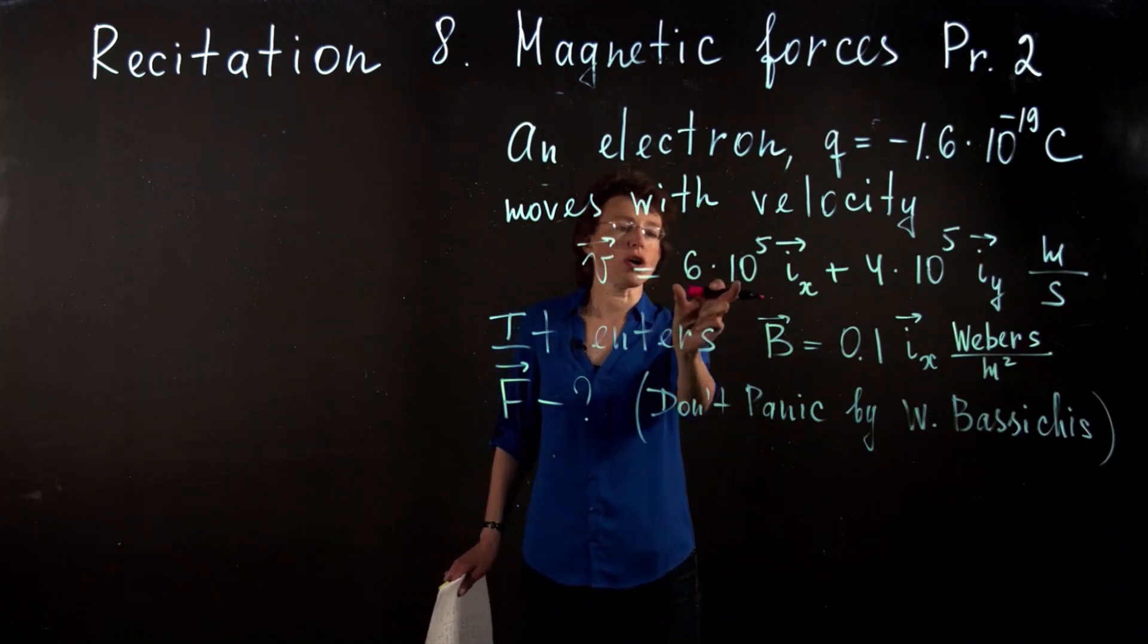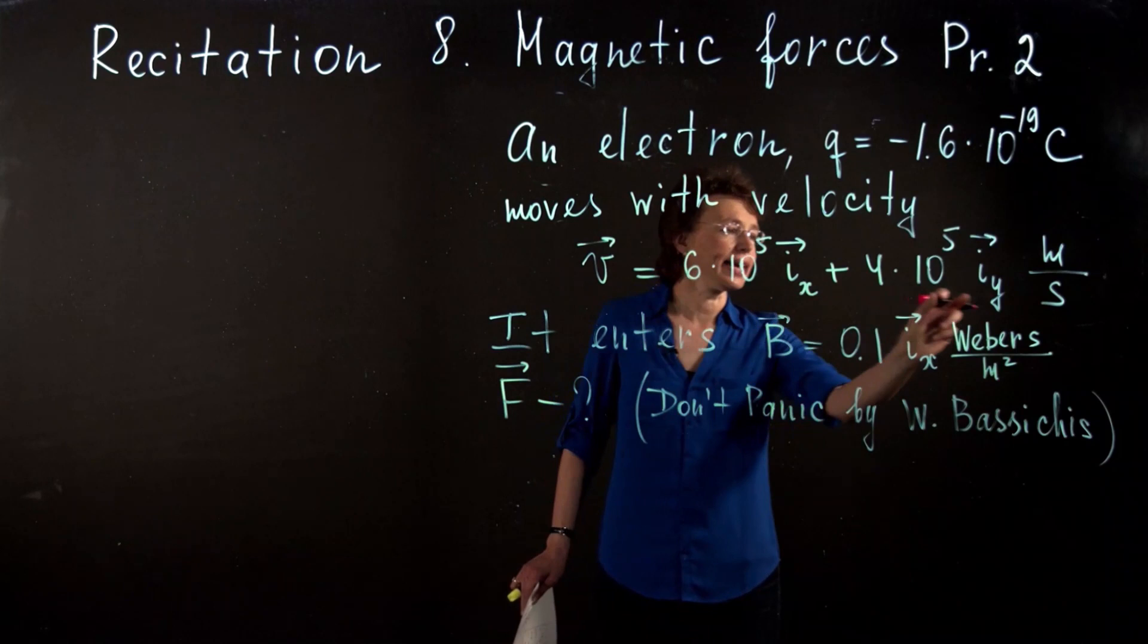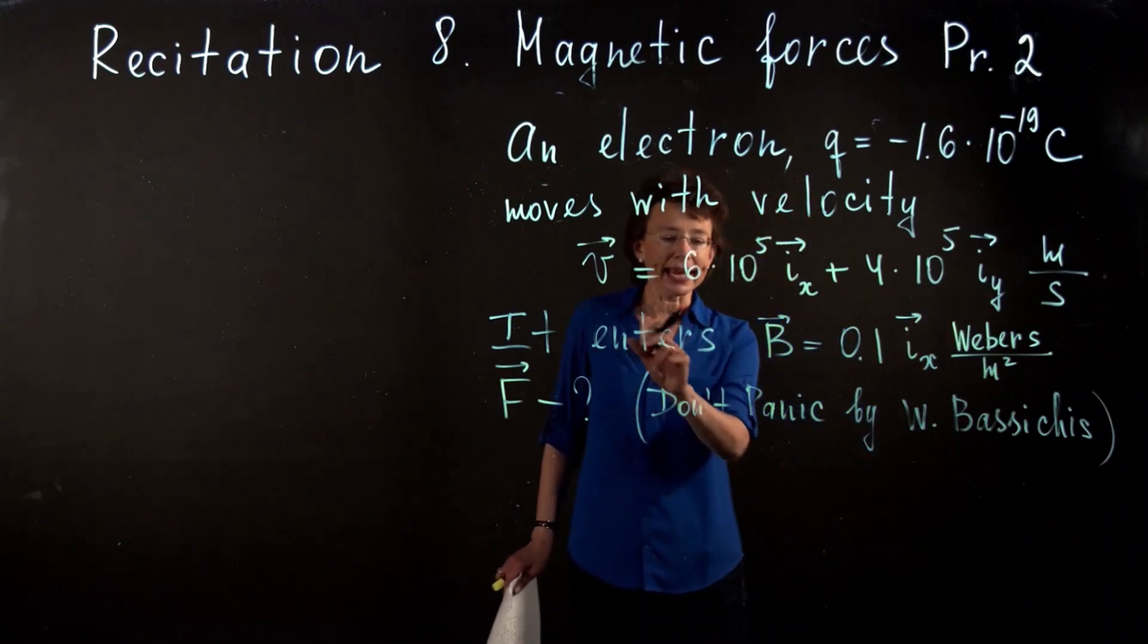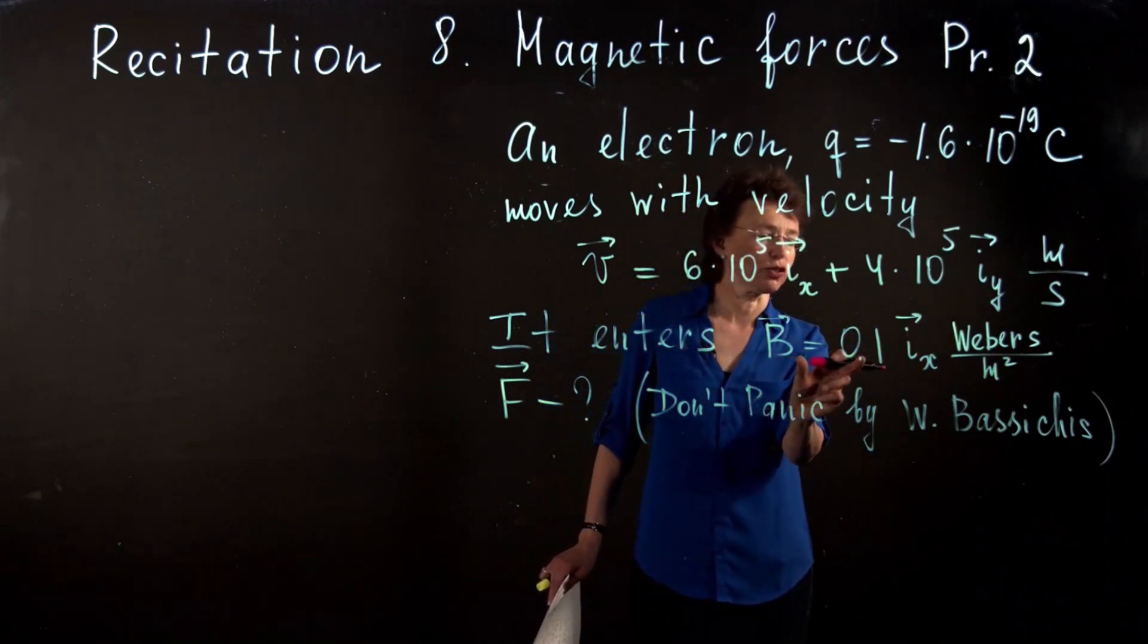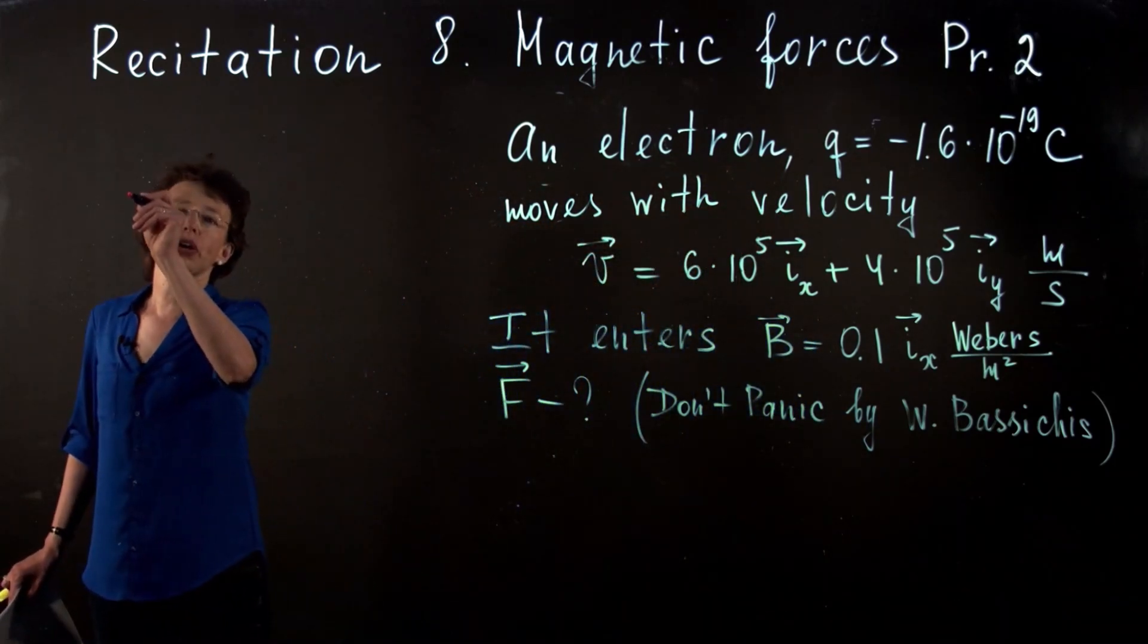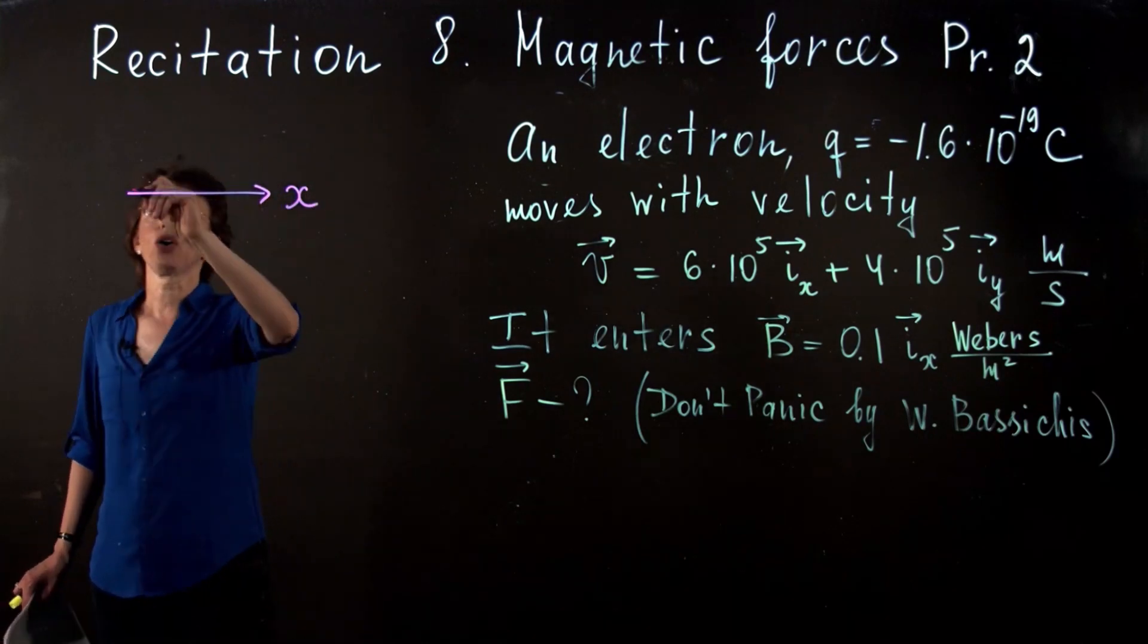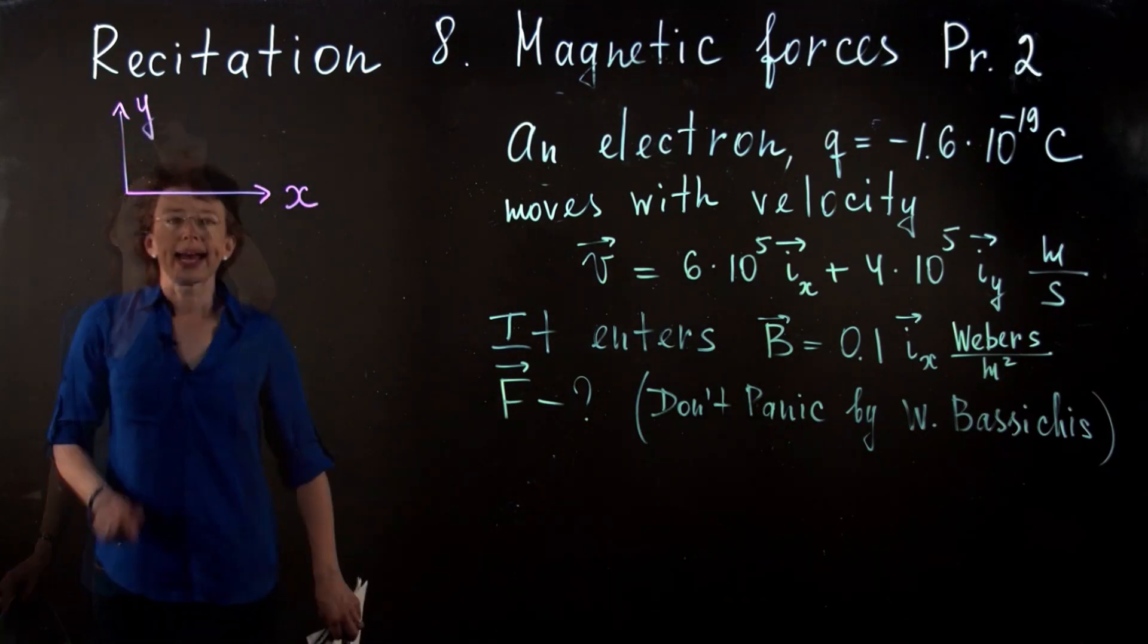It moves with velocity that has two components ix and iy, and it enters the magnetic field that is in the x direction. If I draw the coordinate system, let's have x to the right, y up.